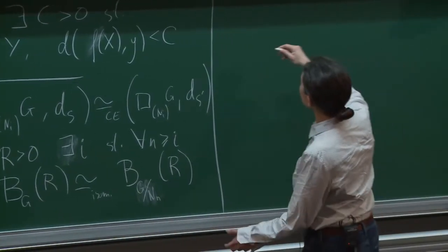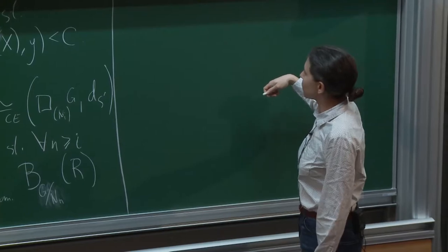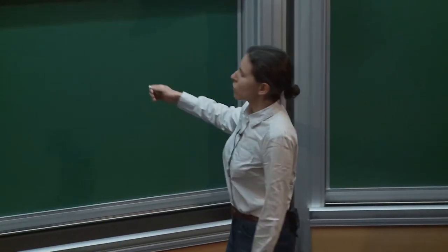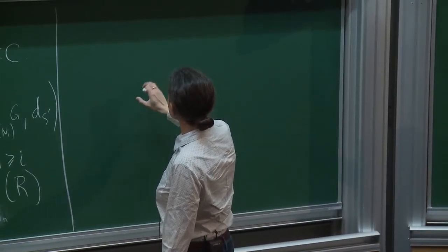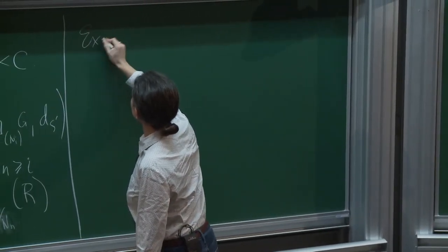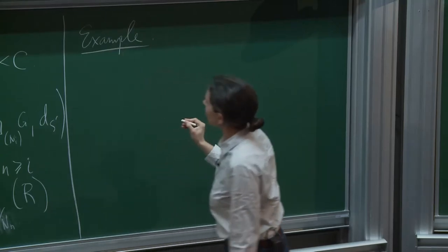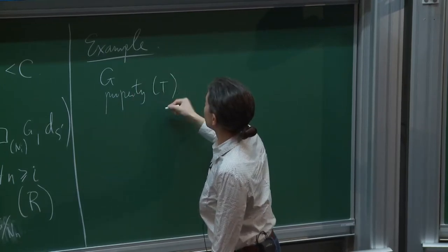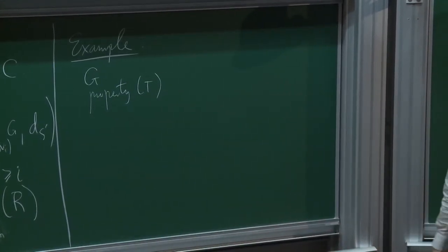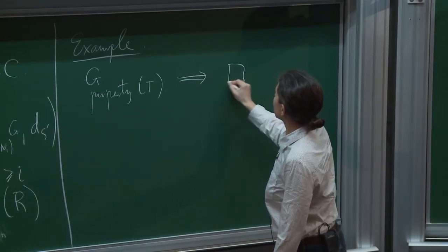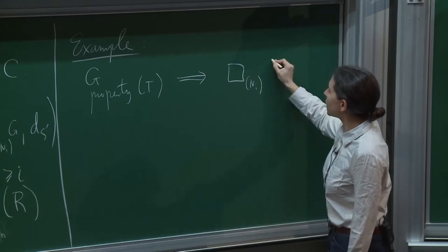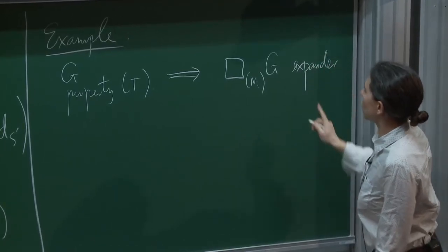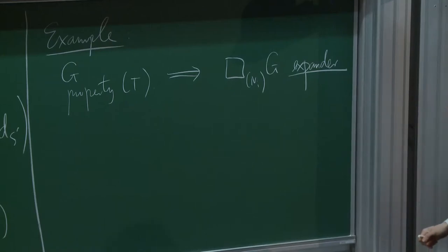There are lots of nice connections between geometric properties of this box space and properties of the group. As a motivating example: if we take G with Kazhdan's property T — a rigidity property of actions on Hilbert space — then the pieces of the box space will be expanders with a uniform expansion constant. An expander sequence is a sequence of finite graphs which are extremely well connected yet do not have too many edges.